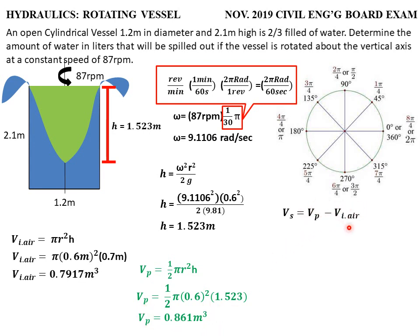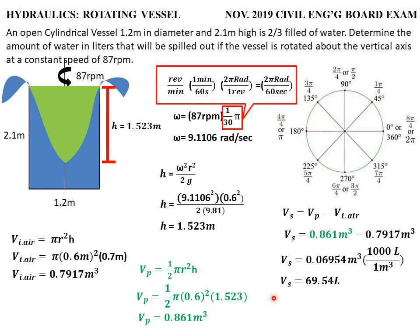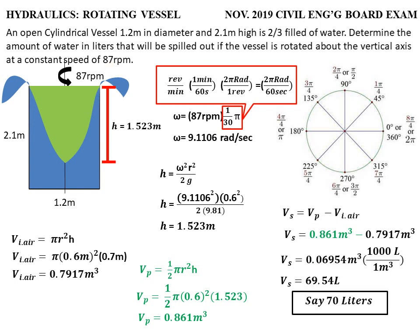We now have the volume of the paraboloid and the volume of the initial air. Volume spilled = 0.861 − 0.7917 = 0.006954 cubic meters. Converting to liters using 1 cubic meter = 1,000 liters, the volume of water spilled out is 69.54 liters, approximately 70 liters.